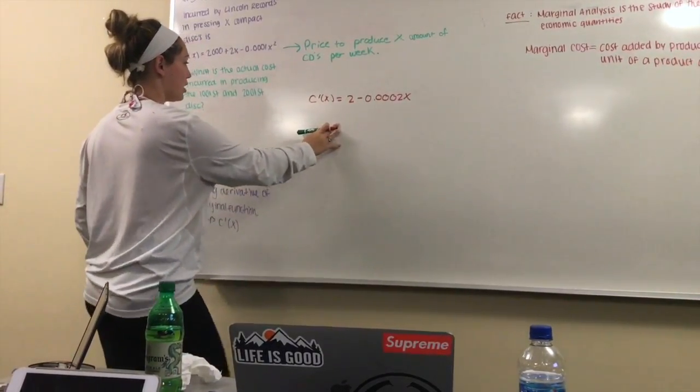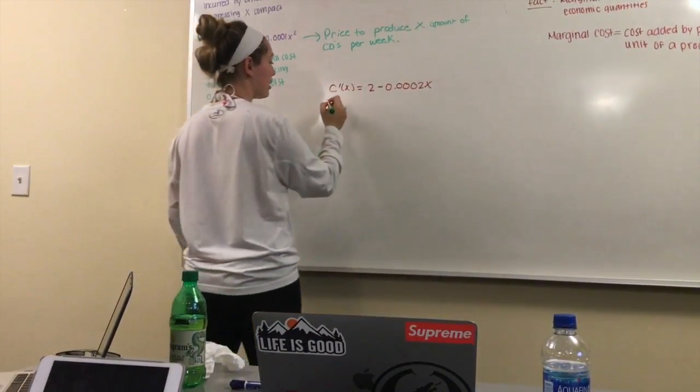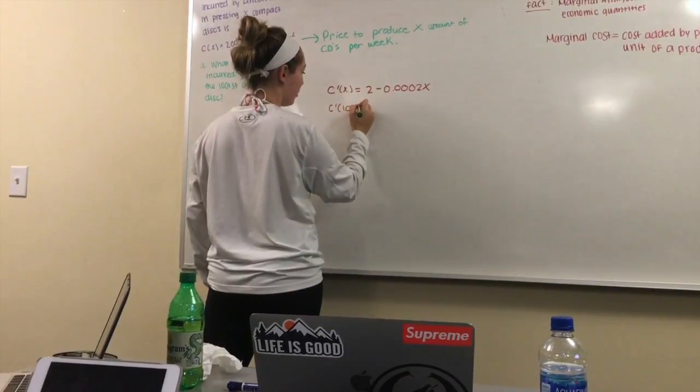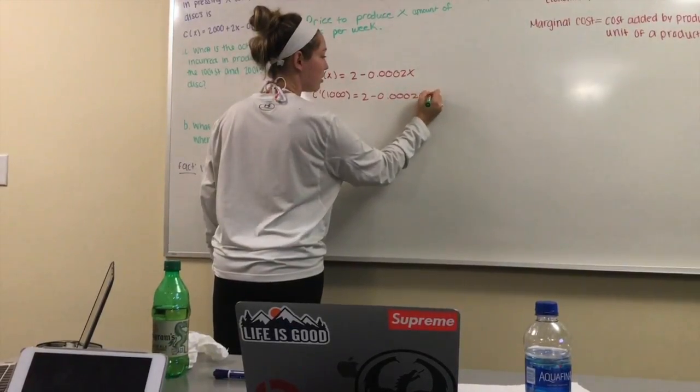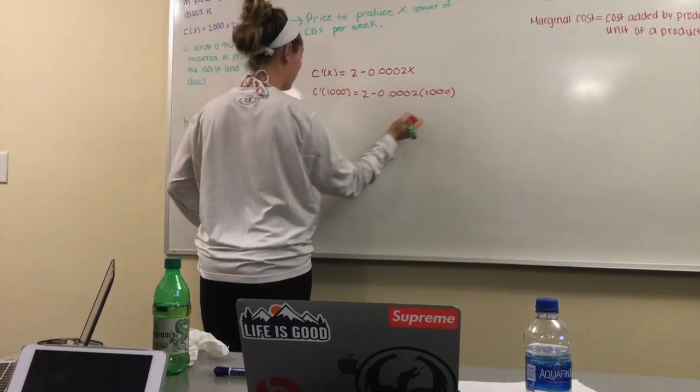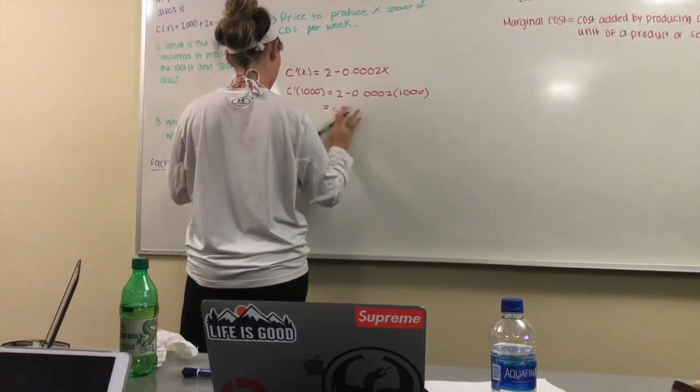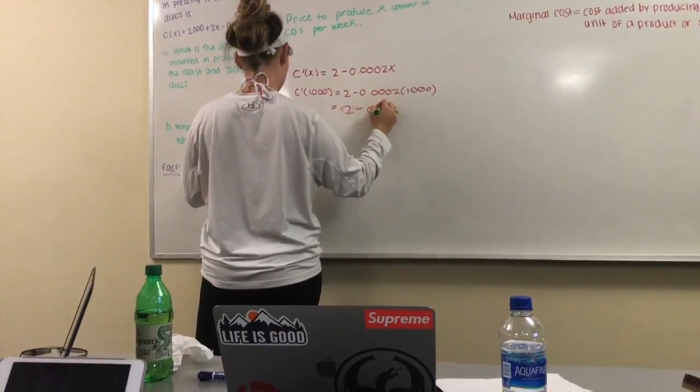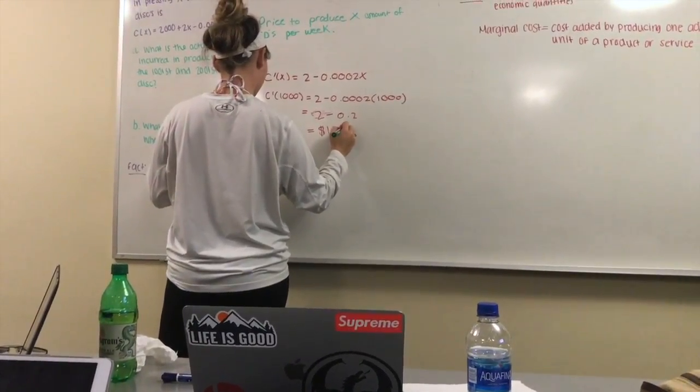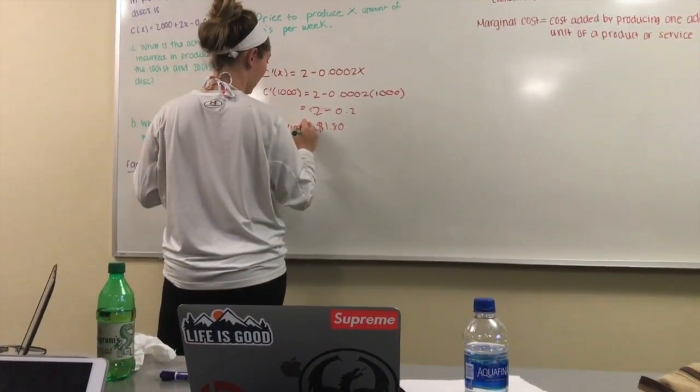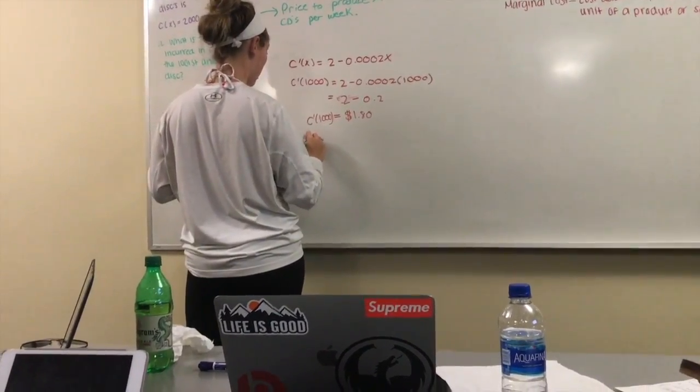So now once you have this equation you're basically just going to plug in 1,000 and 2,000 in for the x. So it would be C'(1,000) equals 2 minus 0.0002 times 1,000. So that will equal 2 minus 0.2 which equals $1.80. So C'(1,000) is $1.80.